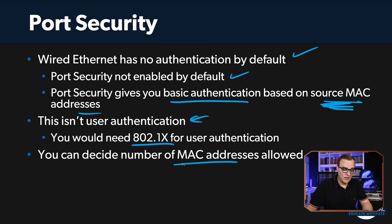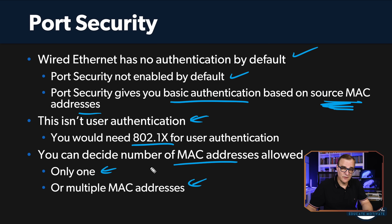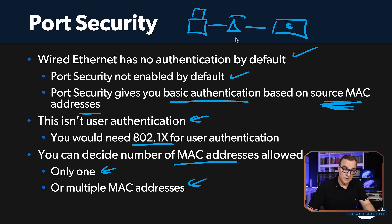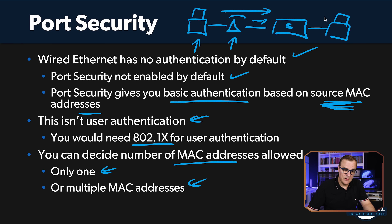You can decide which MAC addresses are allowed. You may decide that only one MAC address is allowed or that multiple are allowed. For example, if you have a PC connected to a phone connected to a switch, the switch will need to allow multiple MAC addresses — both the phone's and the PC's MAC address. So if just one PC is connected to a port, you would only allow one MAC address. But if you have multiple devices, such as a PC and a phone, then you need to allow multiple MAC addresses on that port.